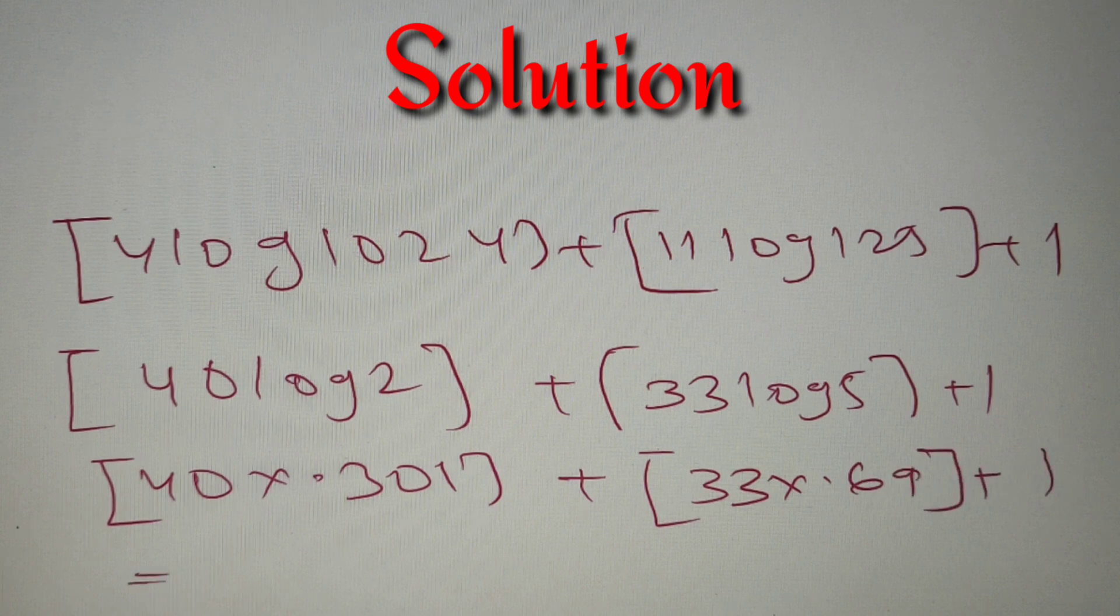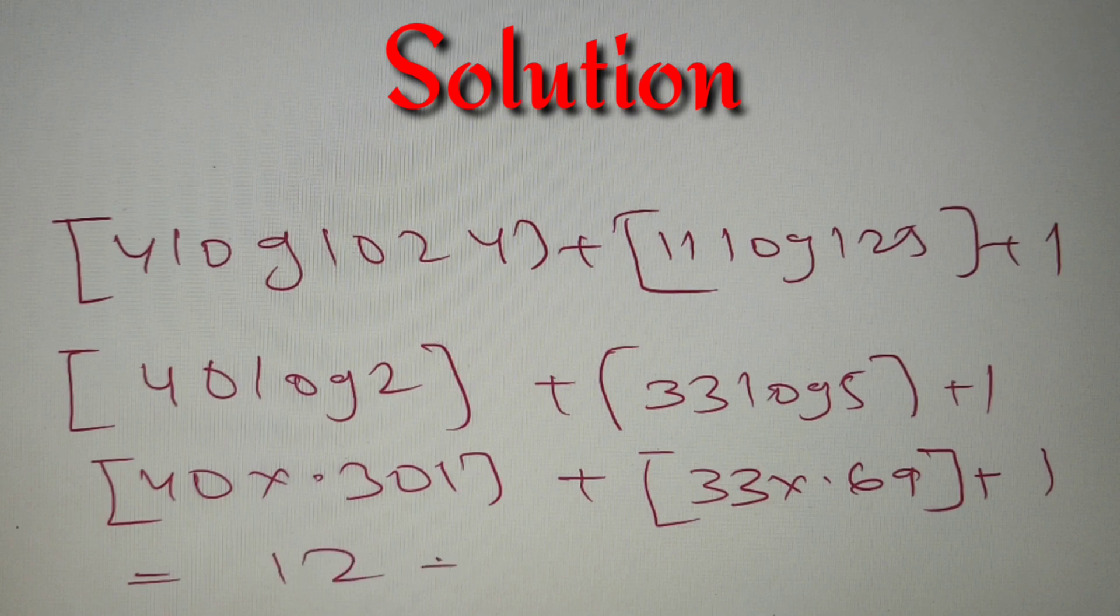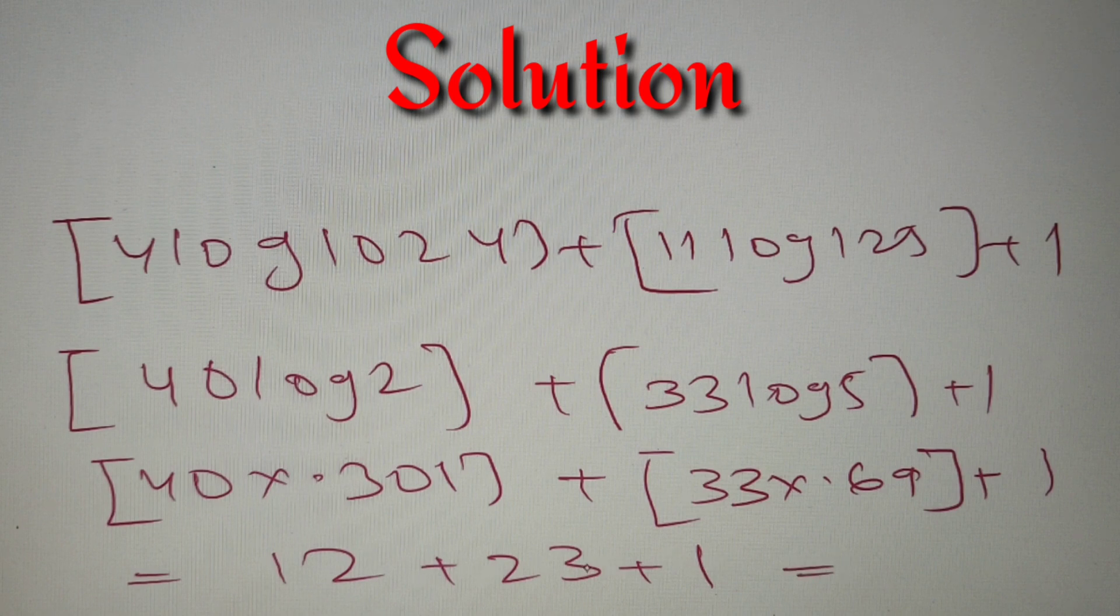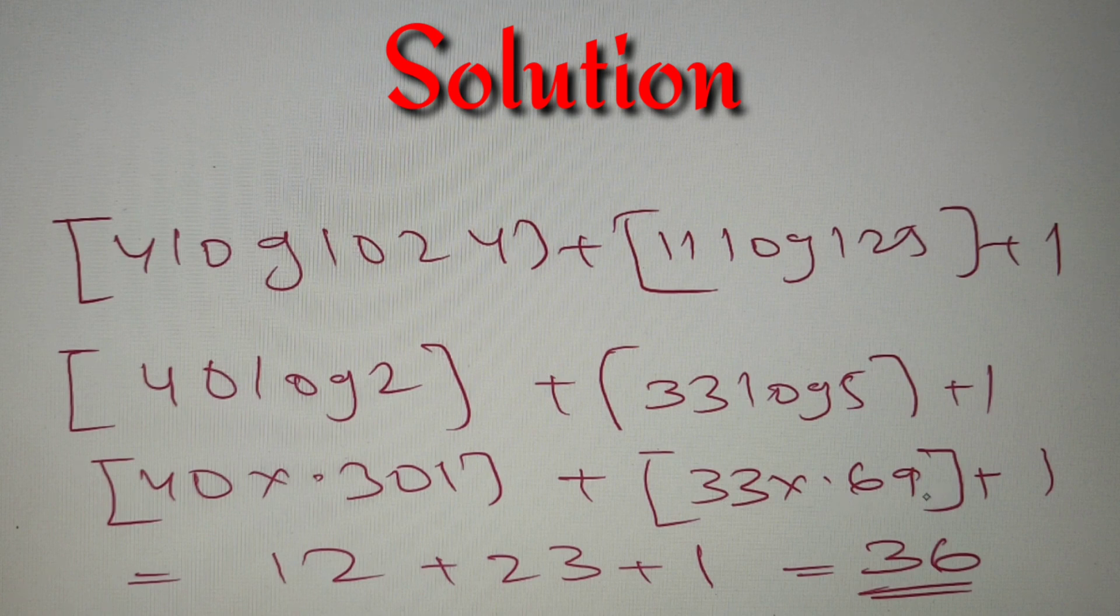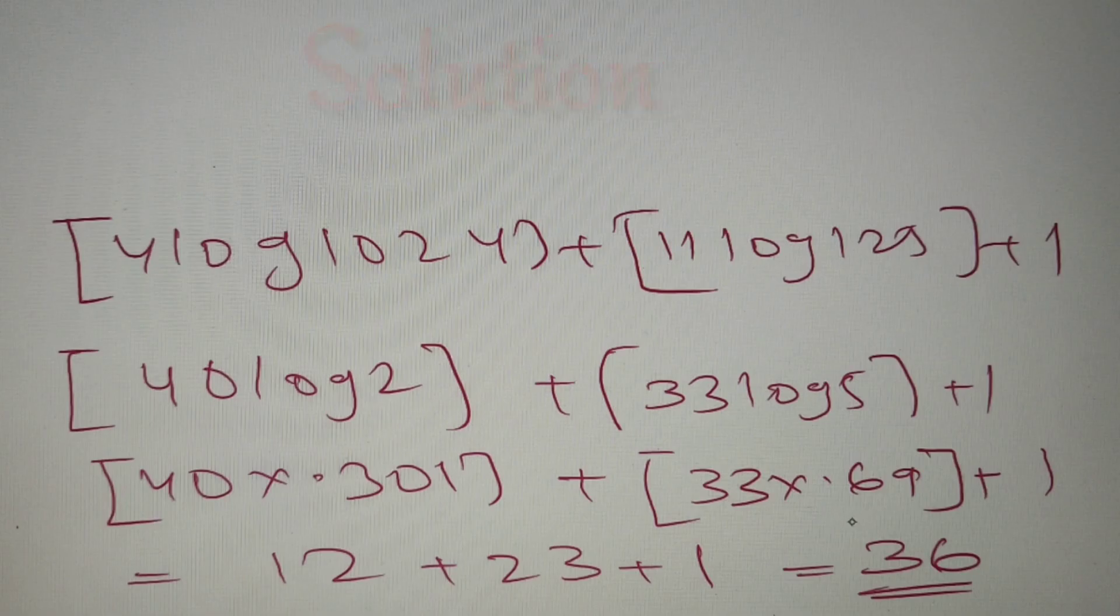Now when you solve this, you'll get 12 as the value, and when you solve this, you will get 23 as the value, and we have to add 1. So finally we'll get 12 + 23 + 1, that is equal to 36. So the given number has 36 digits, and according to the given options, it is option number B. So the final answer is option number B, 36.